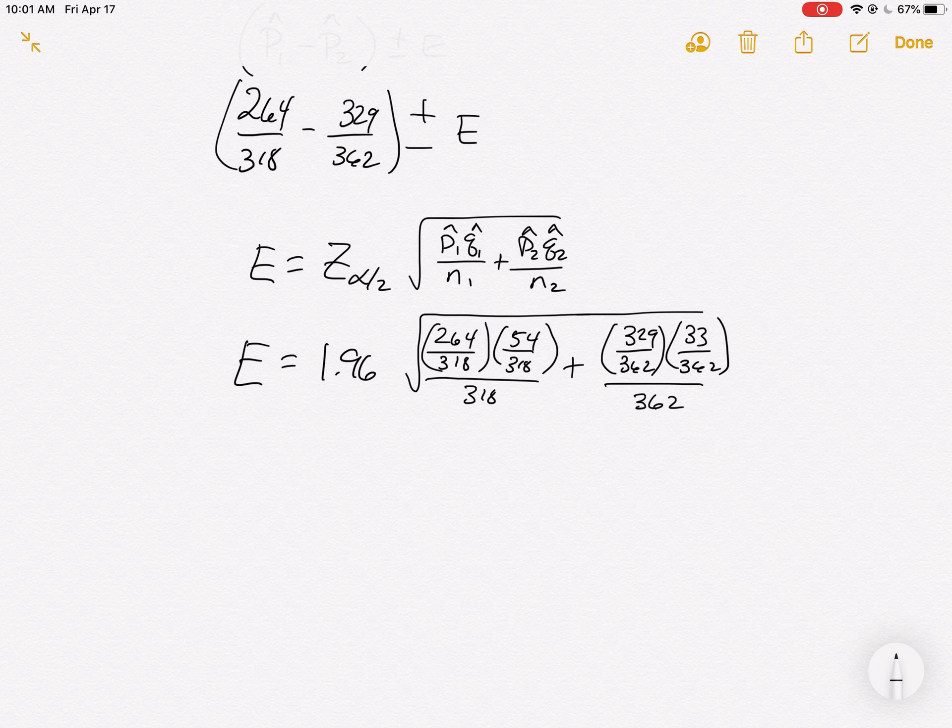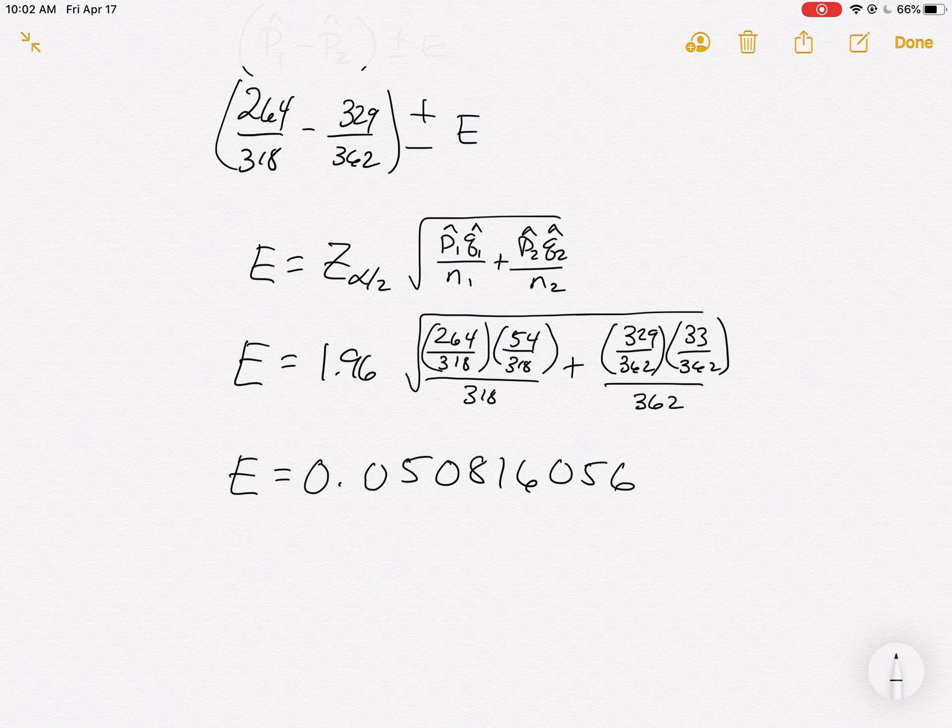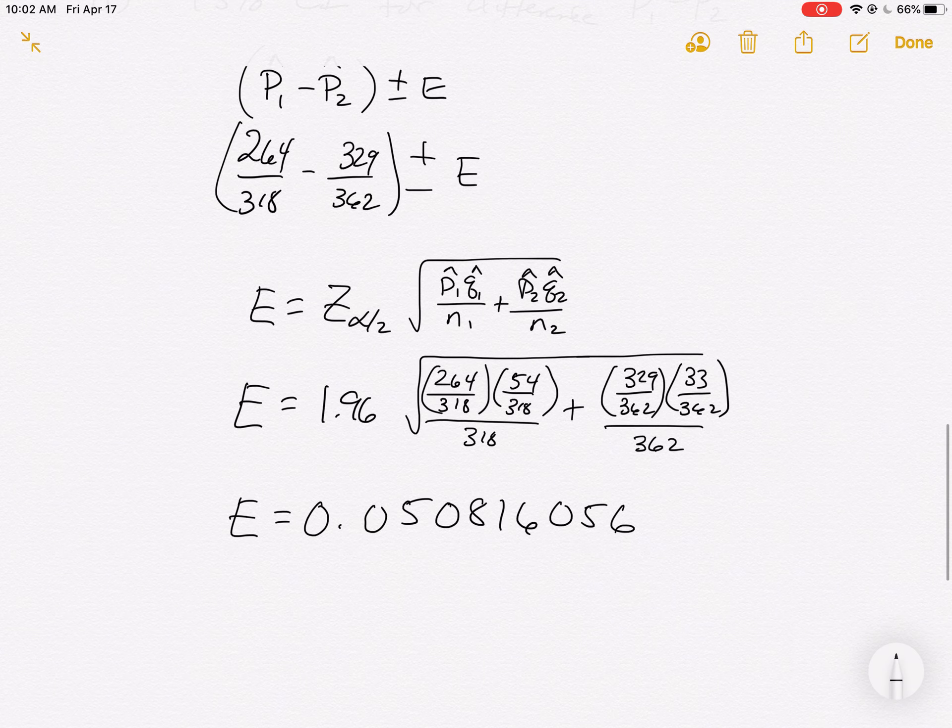A lot of work for both of these problems. Let's go see what our error is. 1.96 times the square root of 264 divided by 318 times 54 divided by 318 divided by 318, plus 329 divided by 362 times 33 divided by 362 divided by 362. We hit equals and get an error of 0.050816056. These are our end answers, so we're welcome to round. We're almost done.